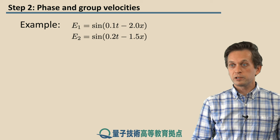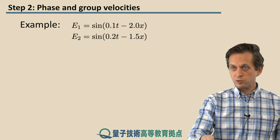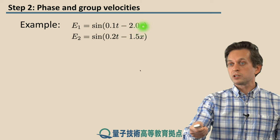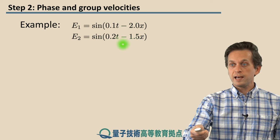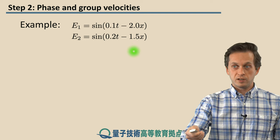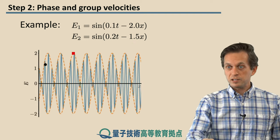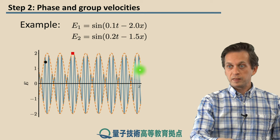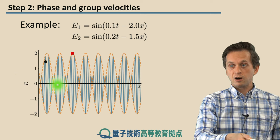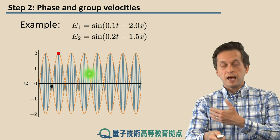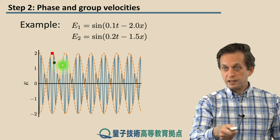So far we have looked at cases when both velocities are in the same direction. Now, let's look at a very peculiar case. Again, we keep the angular frequencies fixed, but this time we change k1 to 2.0 and k2 to 1.5. And let's see what happens. You see that the black dot representing our phase velocity is moving in the positive x direction, as was the case before. But on the other hand, this red square is moving backwards, because the group velocity in this case is actually negative.